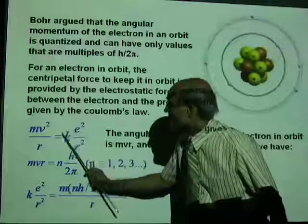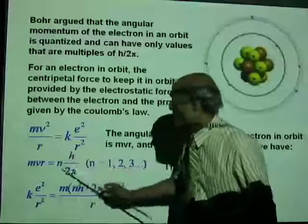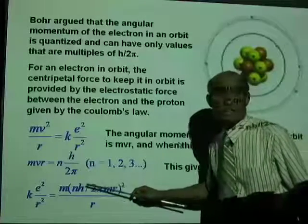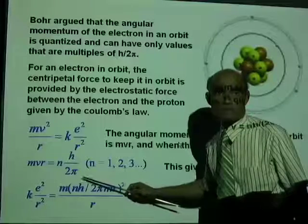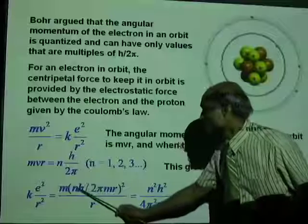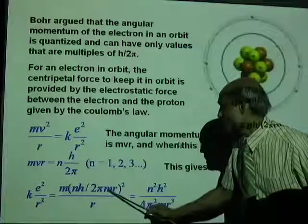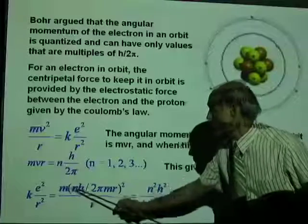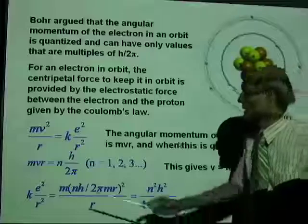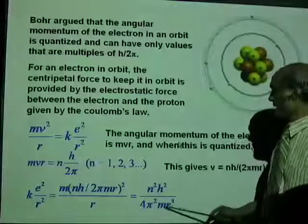Therefore, if you now come here: k e squared over r equals m v squared over r, and I'm going to replace v by n h divided by 2 pi m r. You must work it out along with me — don't just watch, take a pencil and paper. If you square this quantity, on the numerator there will be n squared h squared, on the denominator 4 pi squared m squared r squared, and one m will cancel, leaving r cubed. So the simplified form will be k e squared over r squared equal to n squared h squared over 4 pi squared m r cubed.